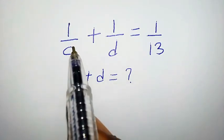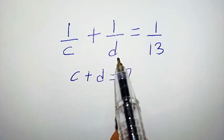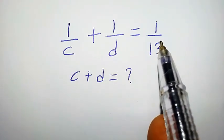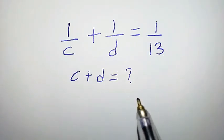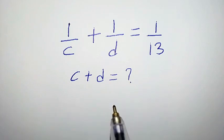Hello, welcome. The problem is: 1 over c plus 1 over d equals 1 over 13. How do we solve for c plus d?